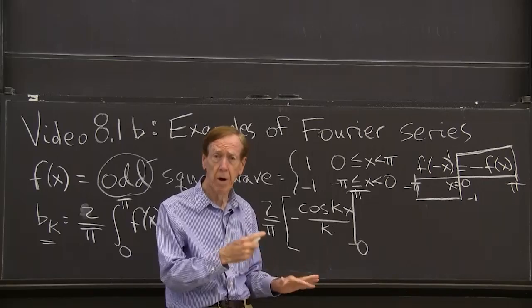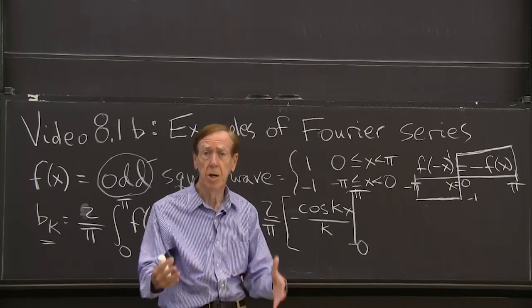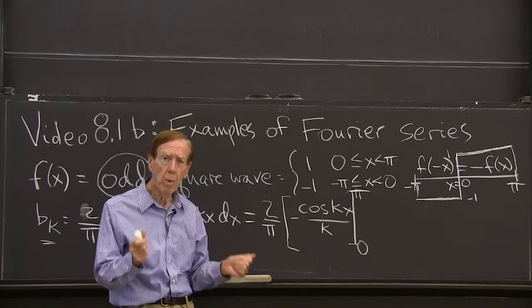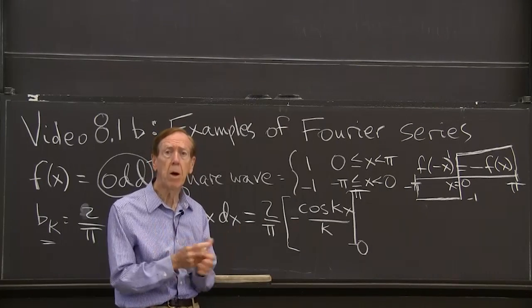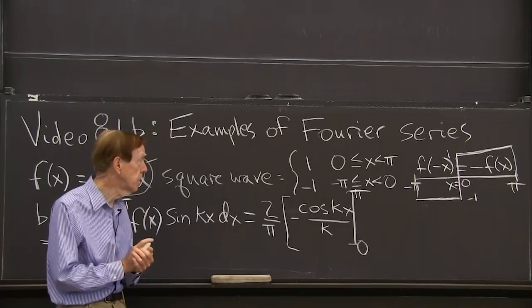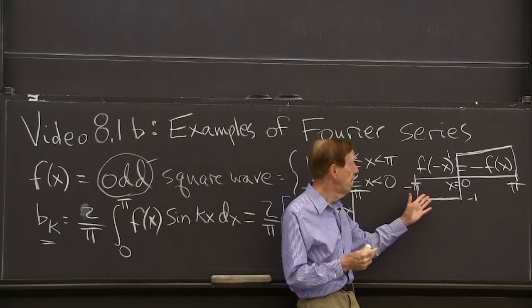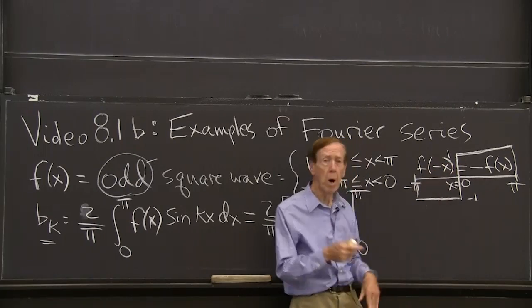All the integrals that involve cosines will tell us 0 for the coefficients a_n. What we'll get is the b coefficients, the sine functions. And so you see that I chose a simple odd function, minus 1 or 1,